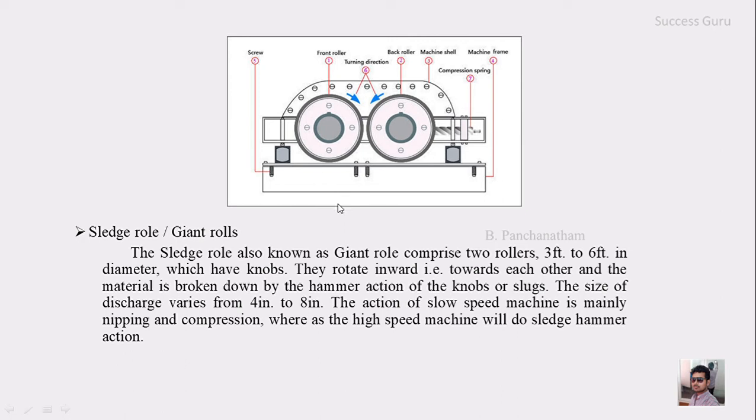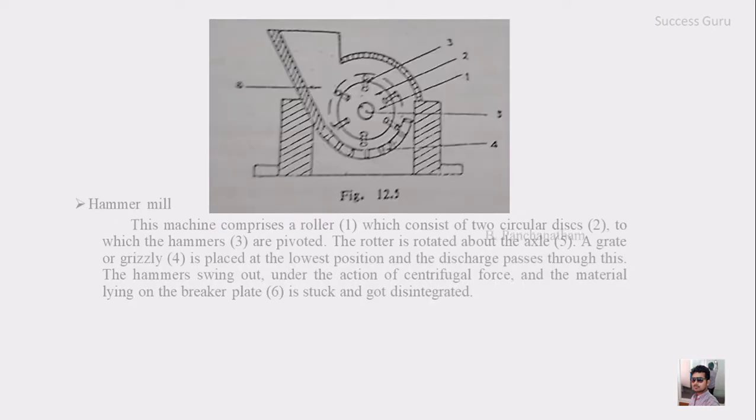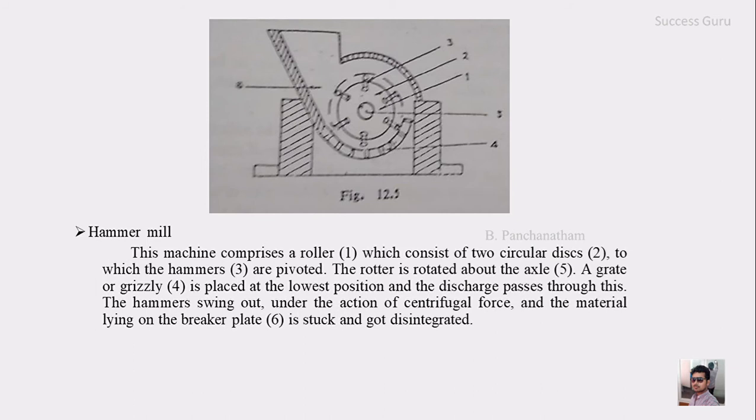The next one is the hammer mill. This machine comprises a roller which consists of two circular discs which has six hammers attached and they are pivoted. The rotor is rotated by the axle and a grate or grizzle is present at the bottom. This grizzle or grate consists of small pores or holes through which the crushing material will come out.